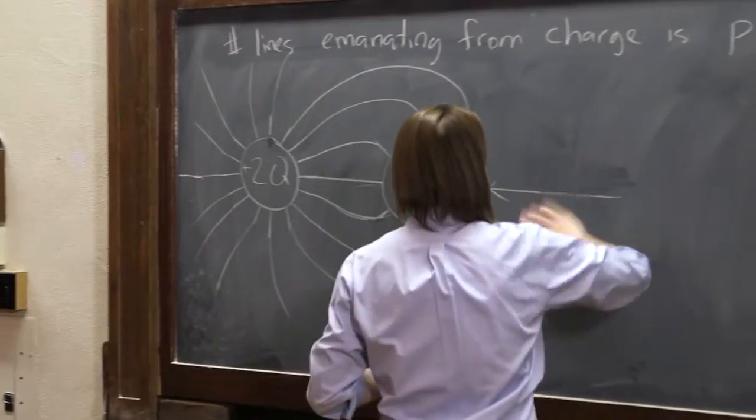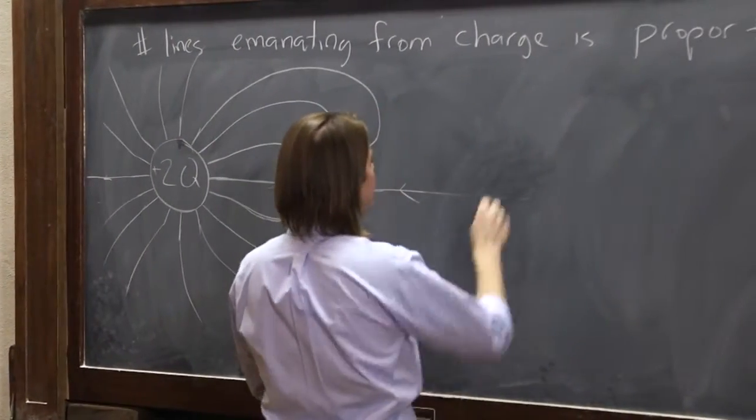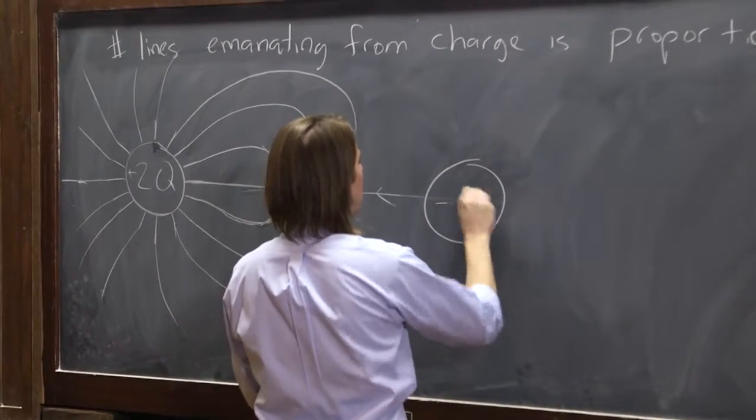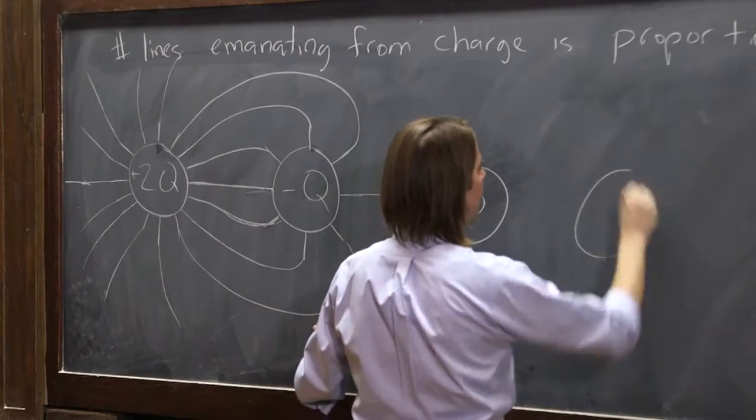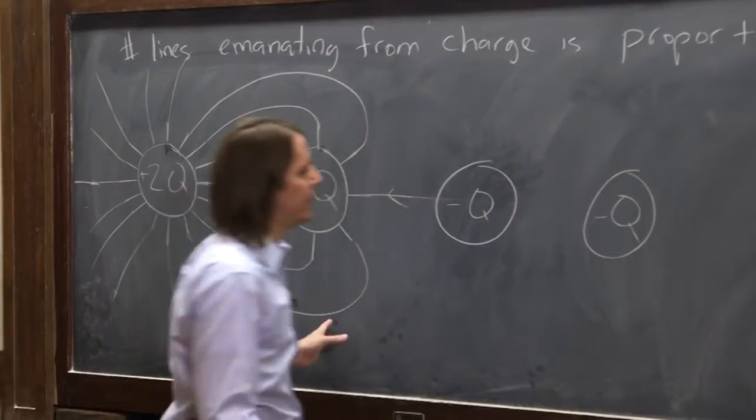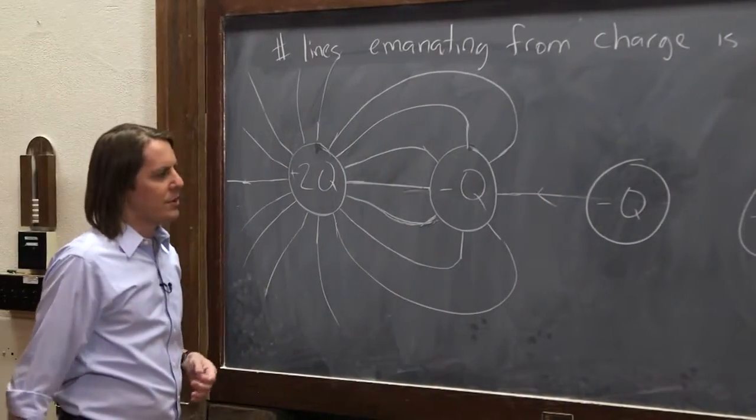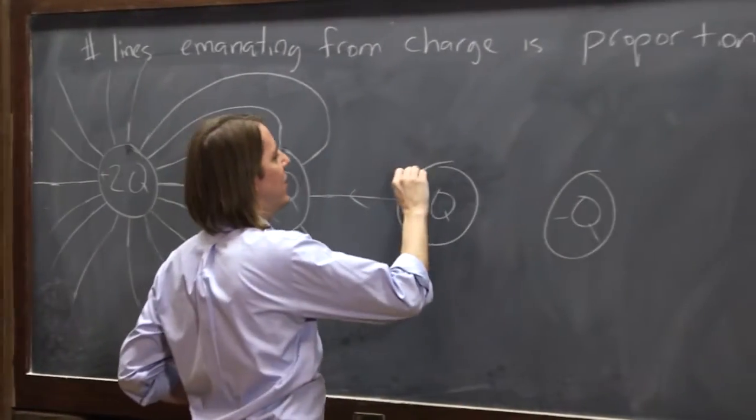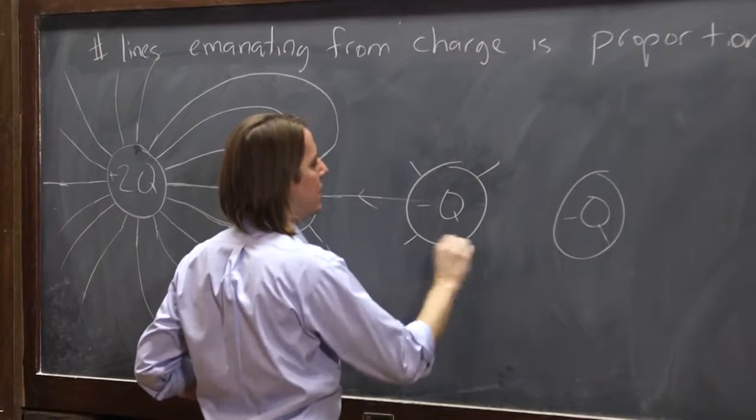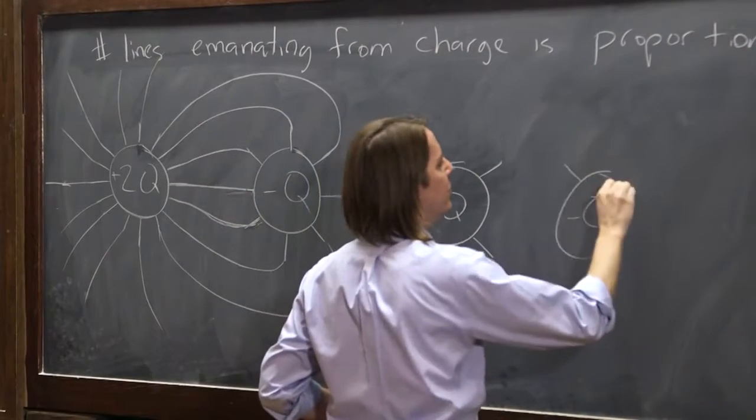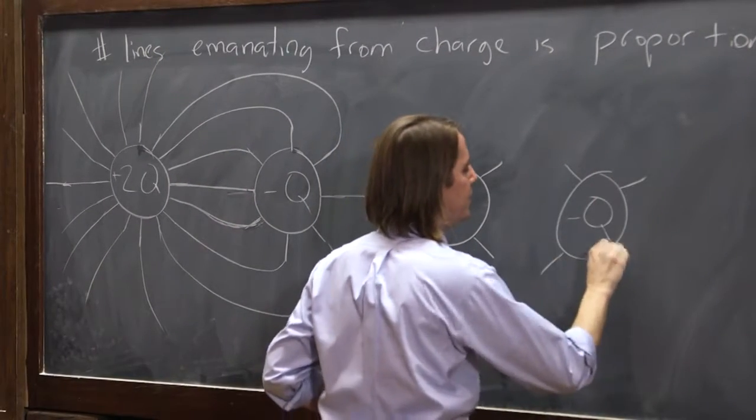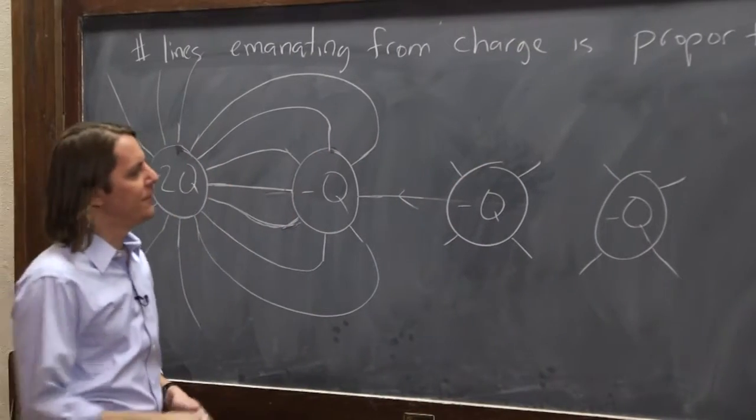Here's another example we could work on. Say we had two negative charges right next to each other. We could start by giving each of them, say, eight lines. And I'm going to be sneaky, or give each of them four lines and just do these four like that coming off the surface.